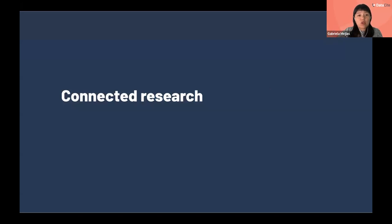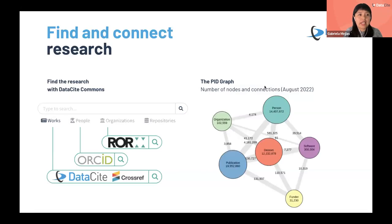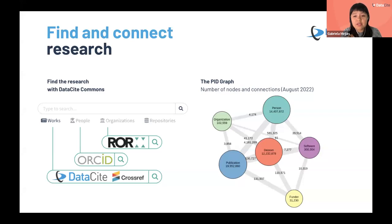With all the infrastructure we provide, what we enable is research to be connected. We've developed a technology called the PID graph. The PID graph is a network of nodes — entities identified by persistent identifiers and connected through relations in the metadata. Here you can see a snapshot of the PID graph, with datasets connected to publications, software, individuals, organizations, and funders.